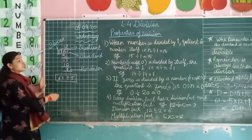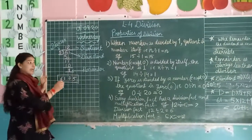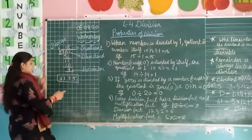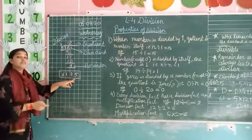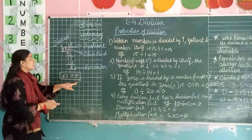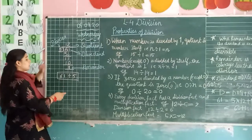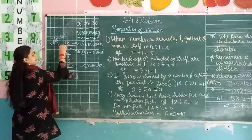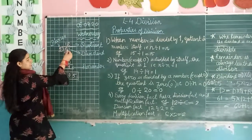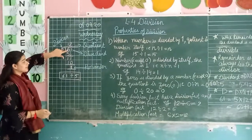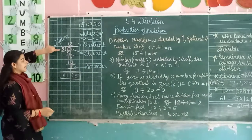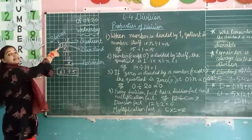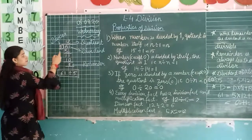The number which we divide is called the dividend. And the number with which we divide it is called the divisor. So let's divide 61 by 5. This is our dividend and this is our divisor.